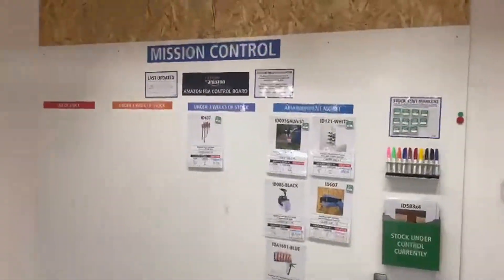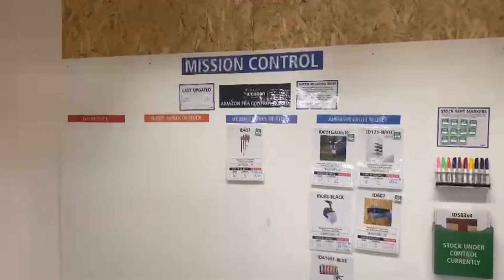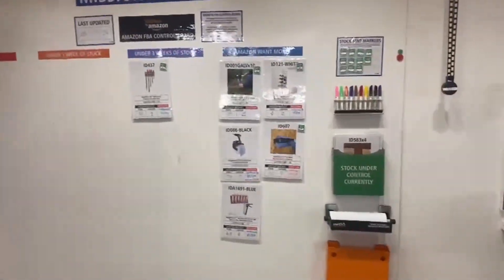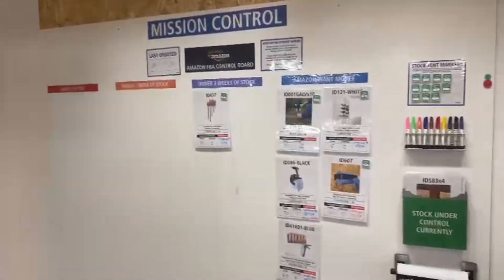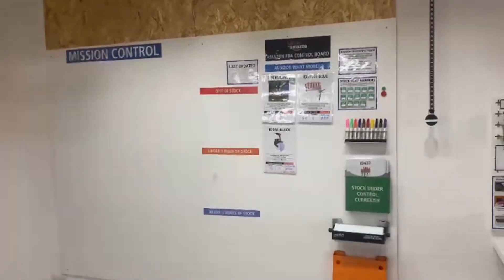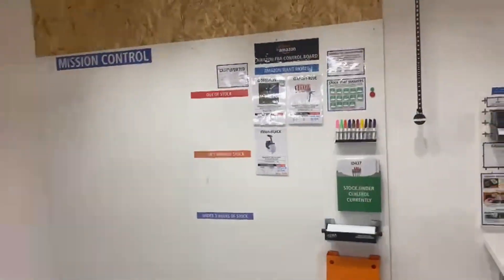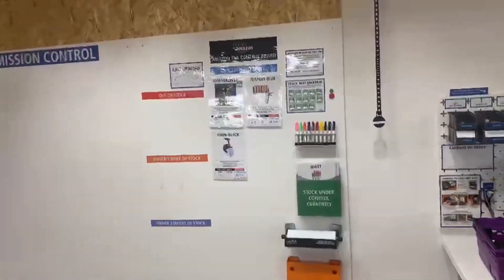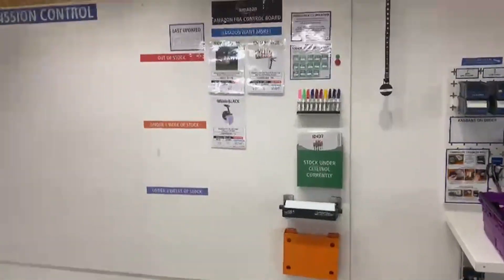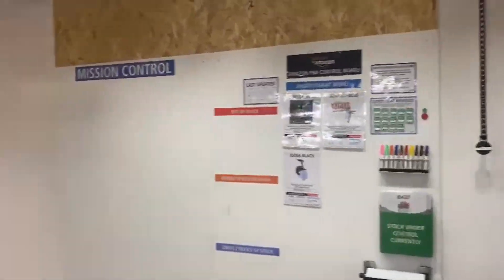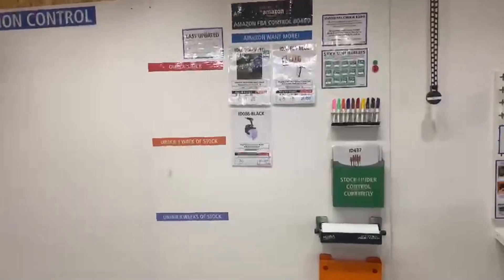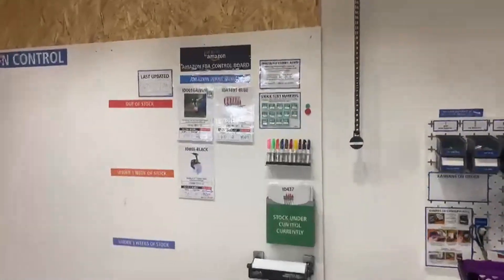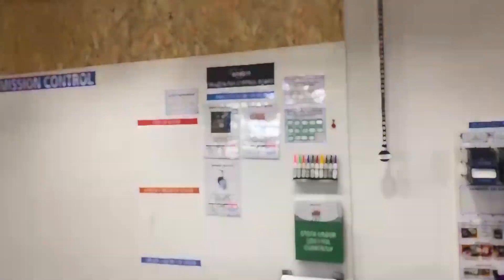Currently the FBA control board takes over the whole of Mission Control, but because we've been making a lot of improvements to get more stock into Amazon, we can start to reduce this. I've managed to shift the entirety of the Amazon control board onto one sheet of metal, and the other side is now for Mission Control, so we've got more space for more activities on that side and we condensed it.